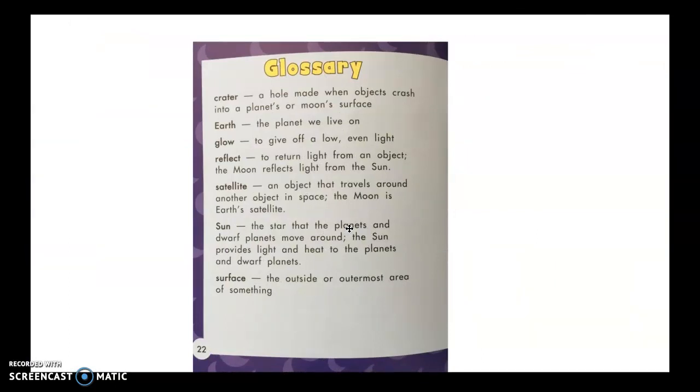Glossary. A glossary is a place where you can find the words that you may not know. We talked about some of these words. We talked about a crater. A hole made when objects crash into a planet's or moon's surface. Earth. I think we know what the earth is. The planet we live on. Glow. To give off a low even light. Reflect. To return light from an object. The moon reflects light from the sun.